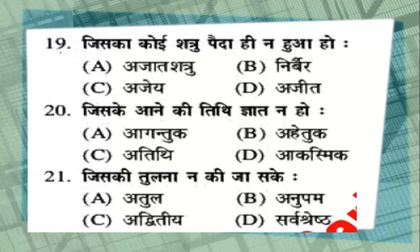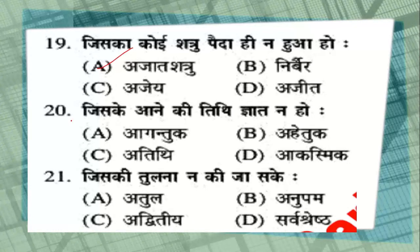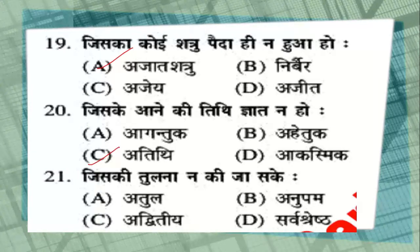Question number 19: जिसका कोई शत्रु पैदा ही न हुआ हो — options: अजात शत्रु, निर्वैर, अजेय, या अजीत. The correct answer is अजात शत्रु. Question number 20: जिसके आने की तिथि ज्ञात न हो — options: आगंतुक, आहेतुक, अतिथि, या आकस्मिक. The correct answer is option C, अतिथि — जिसके आने की तिथि ज्ञात न हो.